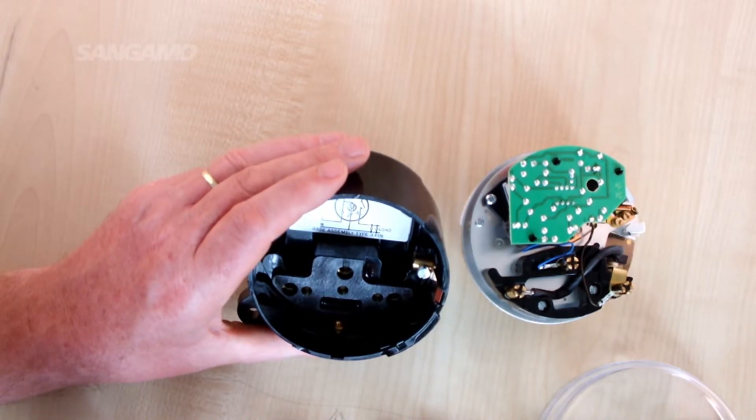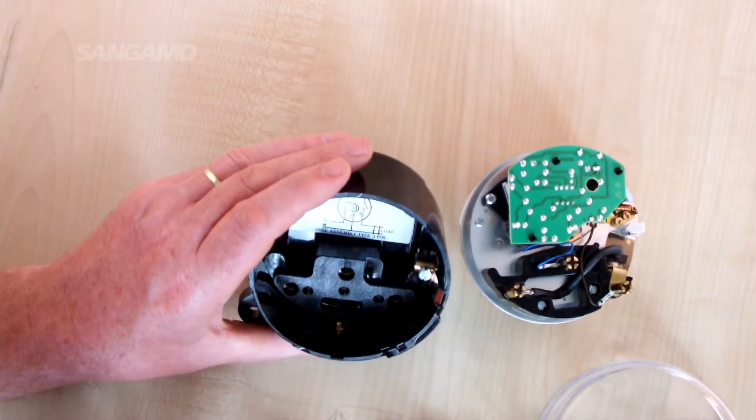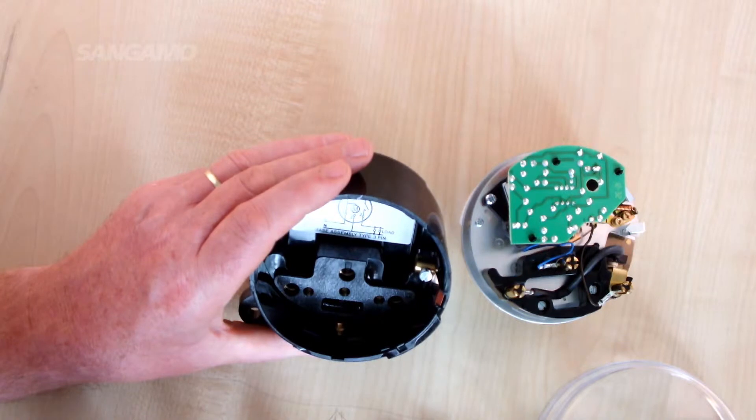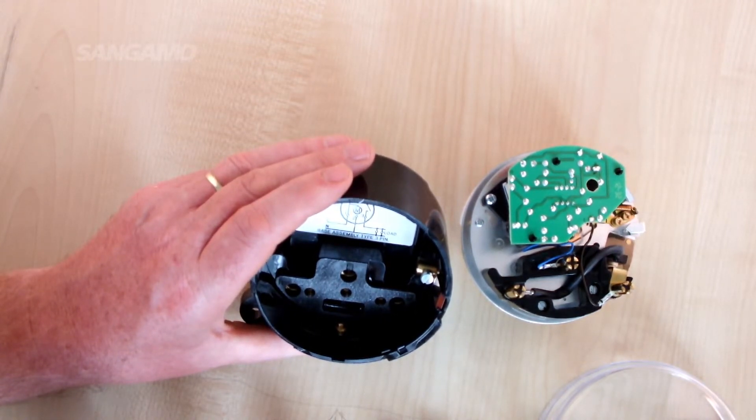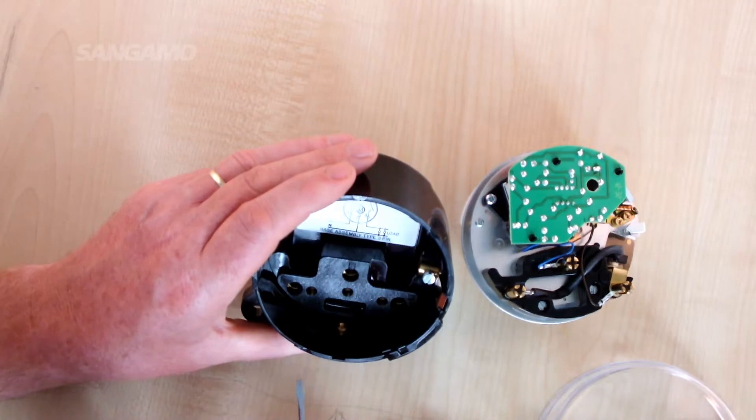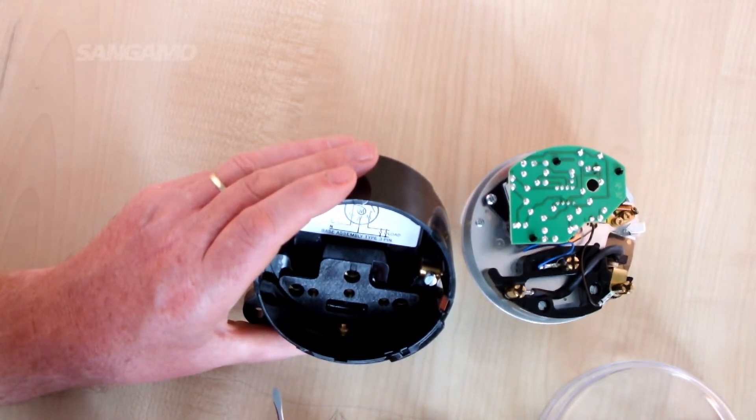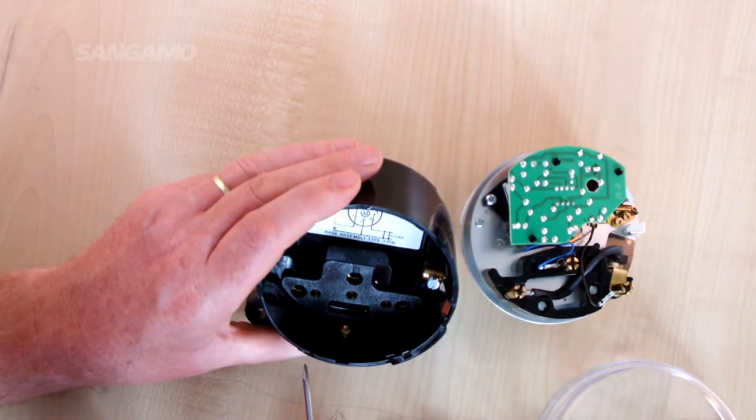You then make the electrical connections as per the wiring diagram shown in the base. The time switch is intended for fixed wiring only, and provision must be made for a means of disconnection from the supply with a contact separation of 3mm on all poles. For more details on the wiring of individual terminals, go to our other how-to video.